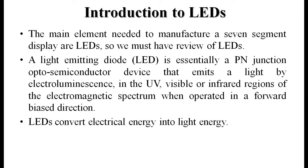We will now refresh knowledge of LEDs, since the main element needed to manufacture a seven segment display is the LED — each of its seven segments is an LED. A light emitting diode (LED) is essentially a p-n junction semiconductor device that emits light by electroluminescence in the UV, visible, or infrared regions of the electromagnetic spectrum when operated in a forward biased direction, converting electrical energy into light energy.